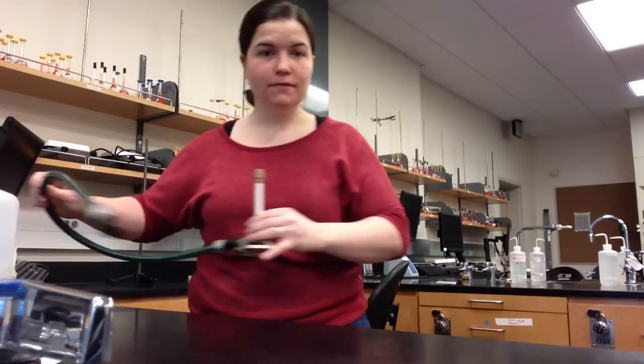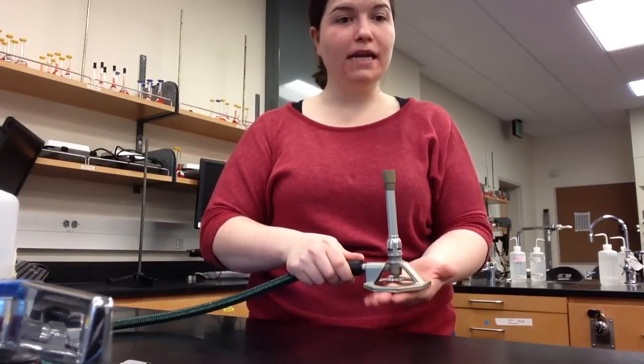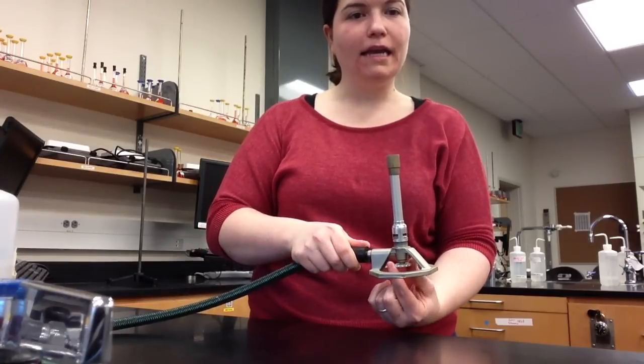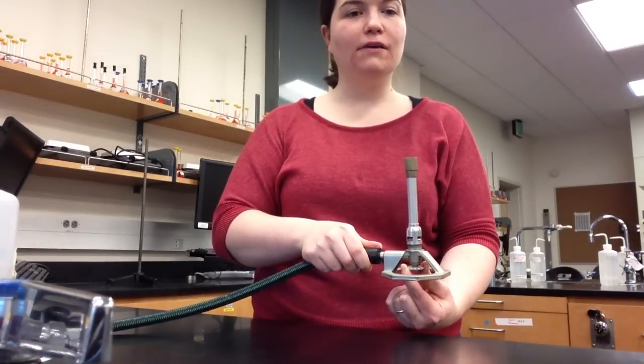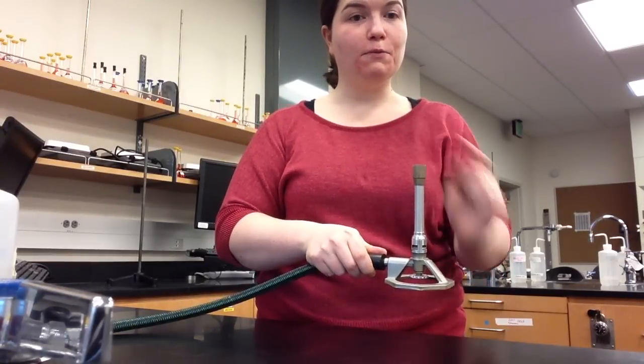Lab safety for this lab starts with the Bunsen burner, which I have right here. A Bunsen burner will produce a flame in the lab. It has a base on the bottom, a gas control valve which allows a small amount or a large amount of gas in, and the barrel of the Bunsen burner where the flame will be produced.